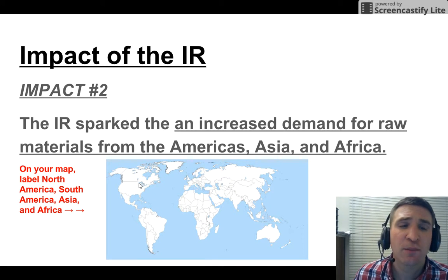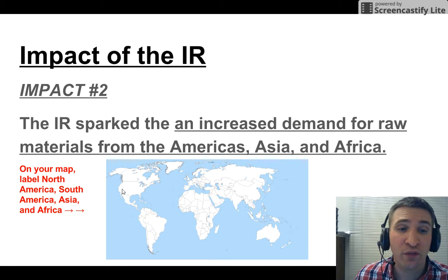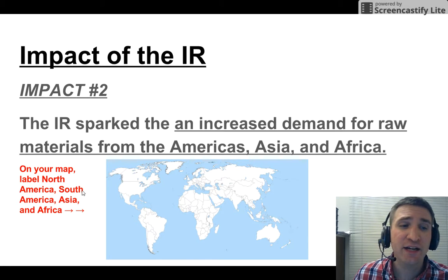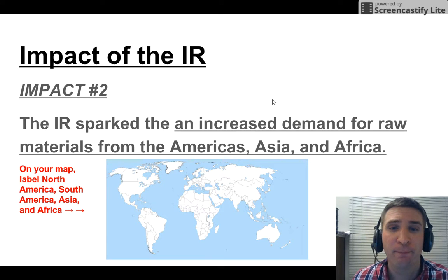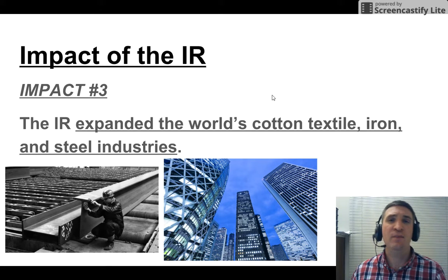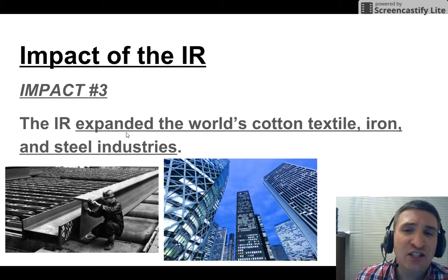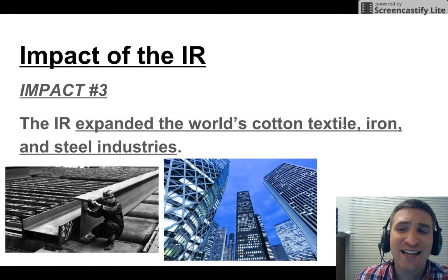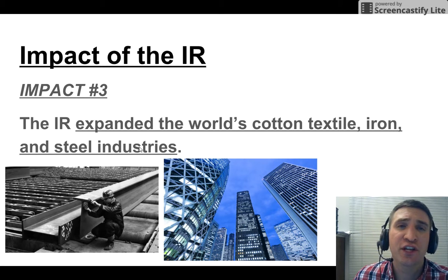Impact number three: the IR expanded the world's cotton, textile, iron, and steel industries. When you melt iron ore, you make steel. And steel can be used to make buildings, including the world's strongest skyscrapers.